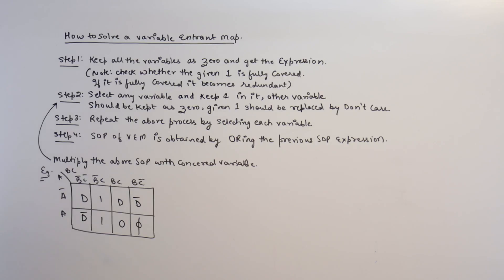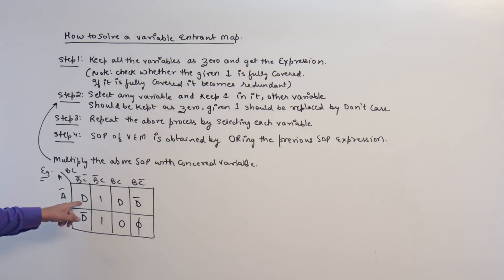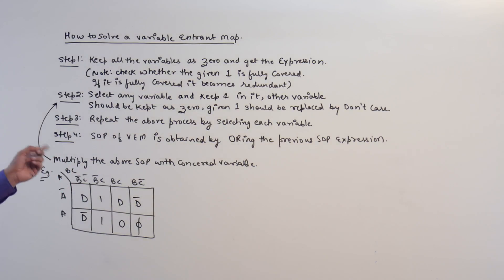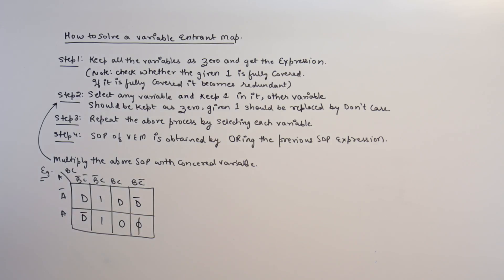Step one: keep all the variables at zero and get the expression. Step two: select any variable — for example, if you have d and d complement, consider these two as two different variables. Select any variable, keep it as one, and the other variable should be kept as zero, and replace all the ones with don't care conditions. Then repeat step three.